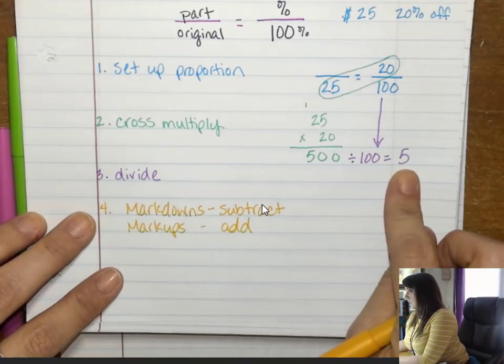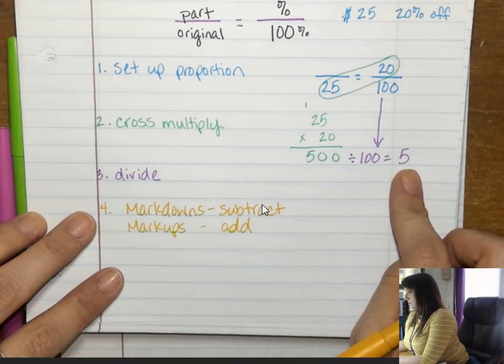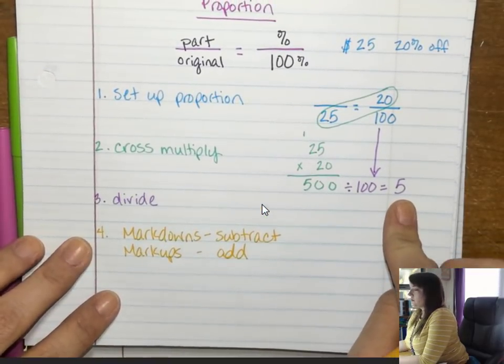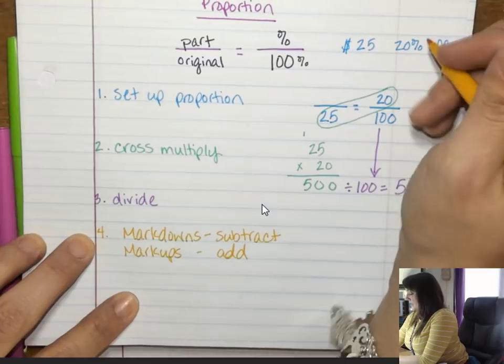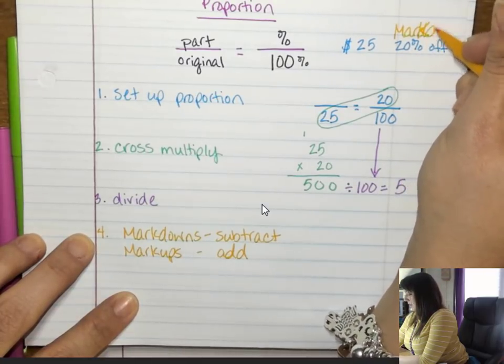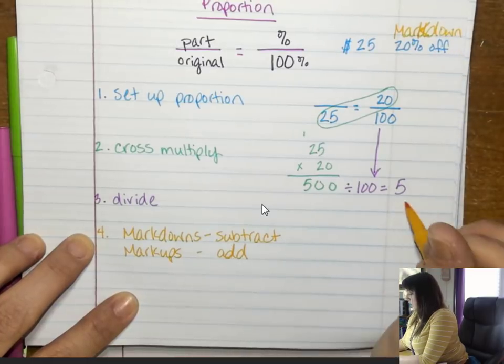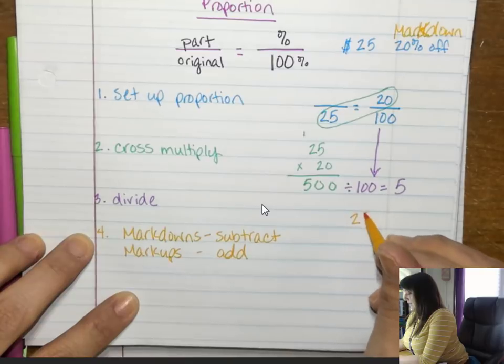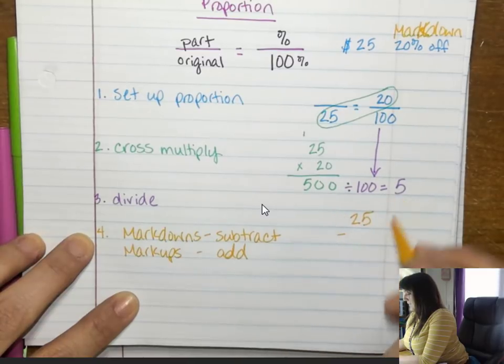So this $5 - was that getting a discount or was I paying taxes? Markdown. So this goes down. This is a markdown. So what was the original price? $25.